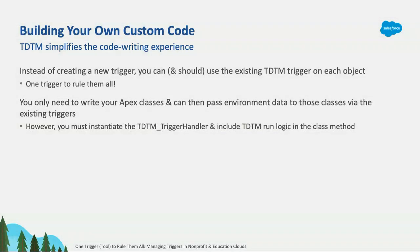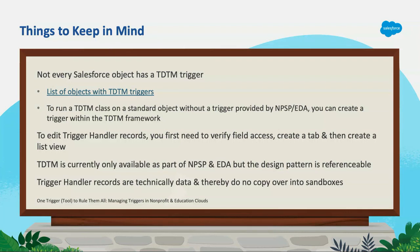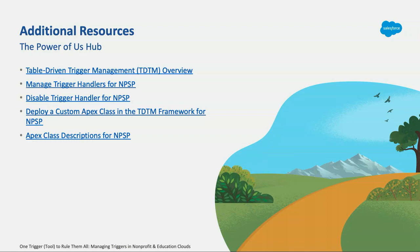Some things to keep in mind: not every object in Salesforce has a TDTM trigger — it's about 20 of them, and there's a list available. You can also add a trigger, which I mentioned — using just a few simple lines of code. To edit trigger handler records, you have to add that tab and make some permission changes. This is only available via NPSP and EDA, but you can reference those design patterns via the GitHub links provided. Lastly, trigger handler records are technically data, so they don't move to a sandbox. If your hair catches fire because you don't see them in a sandbox, that's why.